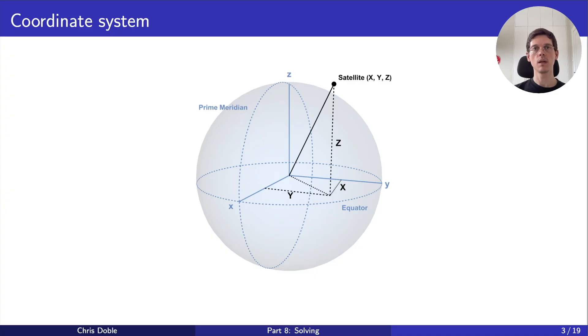Using this coordinate system, let's say the satellite is located at the coordinates capital X, Y, Z, and it transmits a signal that takes capital T seconds to reach us. The signal moves at the speed of light c, so it traveled a total distance c times T. If we draw a sphere centered on the satellite with a radius equal to this distance, we know that we must be located somewhere on its surface.